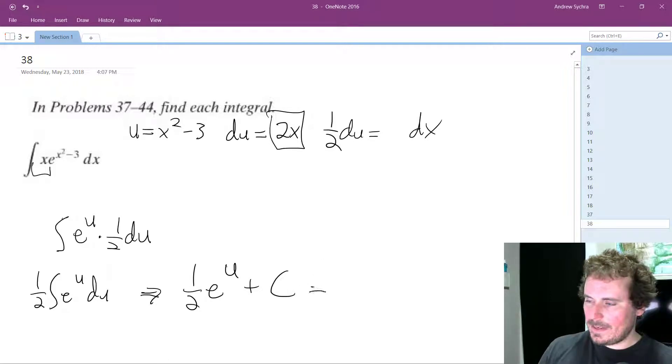So if we sub everything back in, we end up with 1 half e raised to the x squared minus 3 plus c.